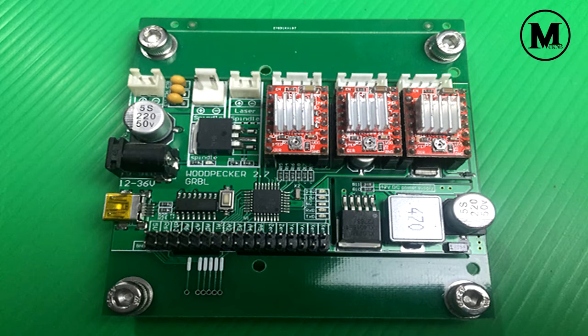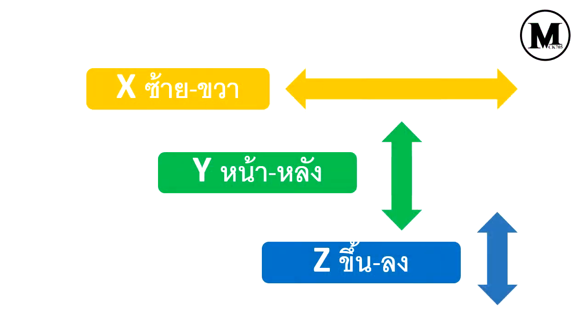เรามาทำความเข้าใจกับคำว่า X Y Z ก่อนนะครับ หลับการจำง่าย X หมายถึง การเคลื่อนที่ซ้ายไปขวา Y หมายถึง การเคลื่อนที่ข้างหน้าและข้างหลัง (Let's understand X Y Z first — easy to remember. X means left-to-right movement. Y means forward-and-backward movement.)